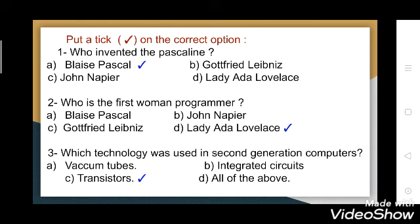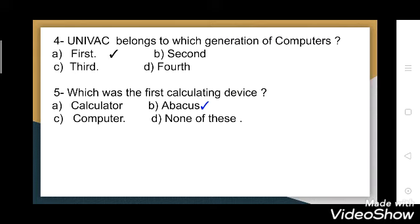Third question: which technology was used in second generation computers? Options are: vacuum tubes — no, vacuum tubes were used in first generation. Integrated circuits — integrated circuits were used in third generation. The question is about second generation, so the correct answer is transistors.